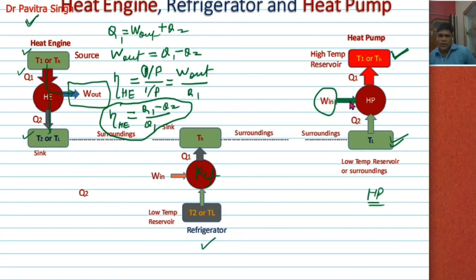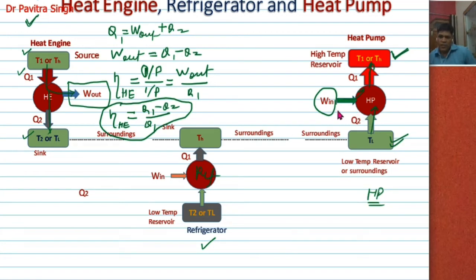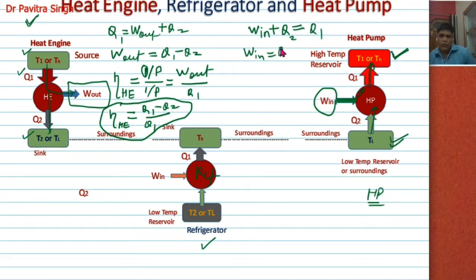You can see in this figure that W is supplied or consumed by this heat pump, and heat Q2 is also absorbed by this heat pump. This heat pump is rejecting heat Q1 into the selected region or chamber which is to be heated. So this desired effect is Q1 at higher temperature T_H. We can say W_in plus Q2 equals Q1.